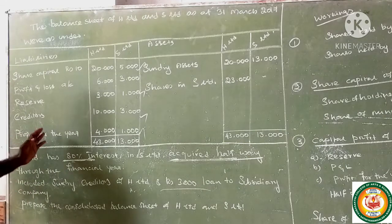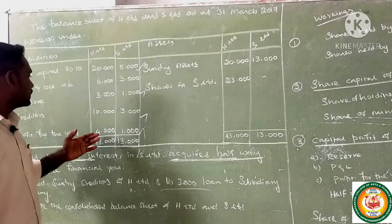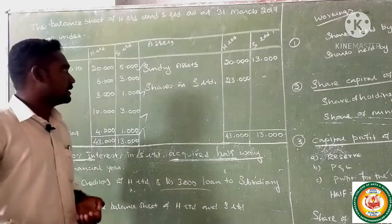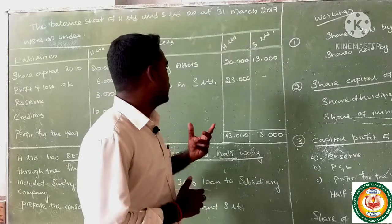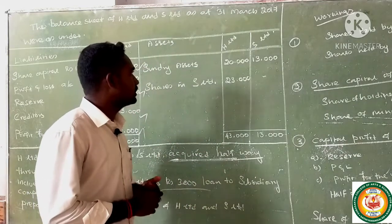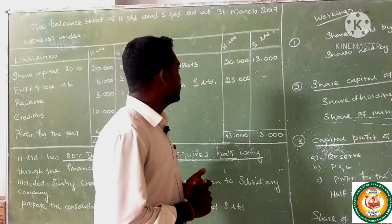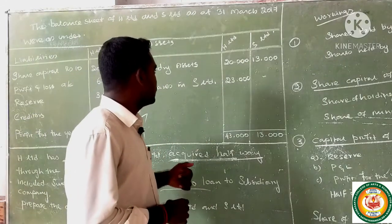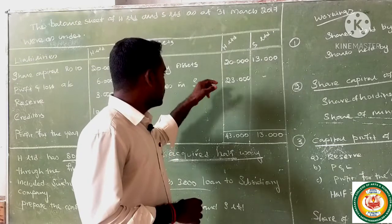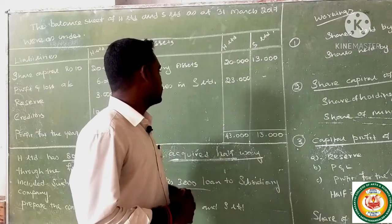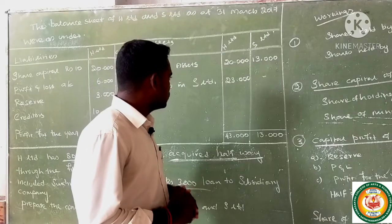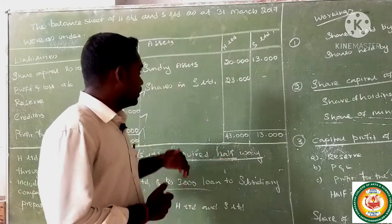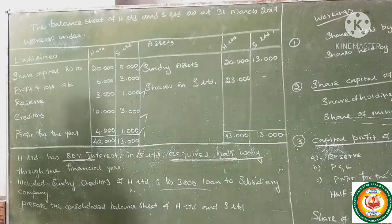Profit for the year — HL: 4,000; S Limited: 1,000. On the assets side: sundry assets — HL: 20,000; S Limited: 13,000. Shares in S Limited: 23,000. Balance sheet total — HL: 43,000; S Limited: 13,000.